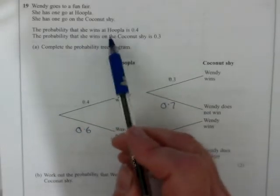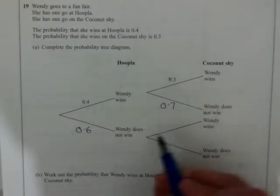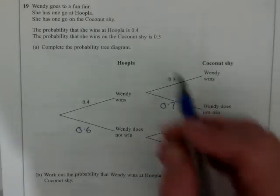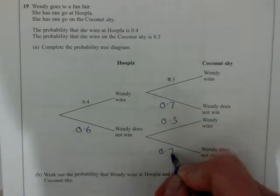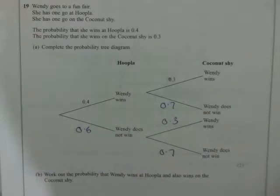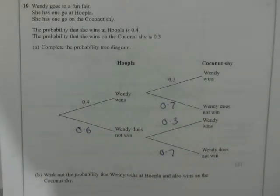So the probabilities are consistently laid out for you. If she plays a game of coconut shy, her chance of winning is 0.3, and her chance of losing is 0.7. It does not tell you it's affected by the hoopla game. So that sets out the tree diagram.